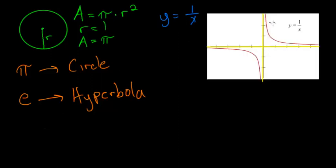And if we were to look at the area under this curve, let's say from where x is equal to 1, all the way to where x is equal to e, then this area right here, this area is equal to 1.